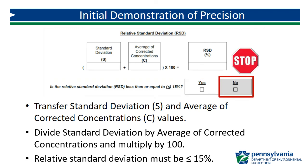If the relative standard deviation is greater than 15%, the analyst's procedure should be evaluated so the source of error can be determined and addressed. Once any issues have been identified and corrected, the analyst should repeat the IDC procedure. If the analyst is not able to successfully complete the IDC, he or she should not conduct compliance measurements for chlorine residual.